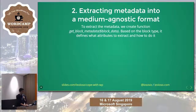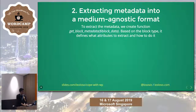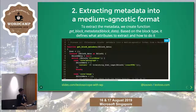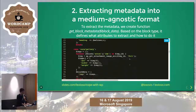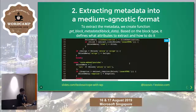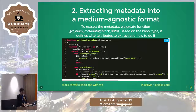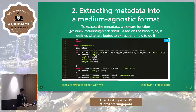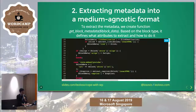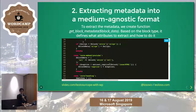To extract the metadata, we get the content from step one and transform it. We create a function called getBlockMetadata. On a block-by-block basis — for a paragraph, I extract the content like this; for an image, I extract the content like this; for a YouTube embed, I extract the content like this. So for each block type, I define how to extract the data.